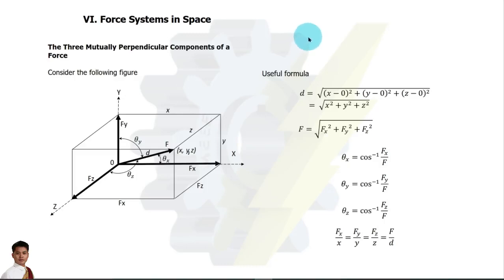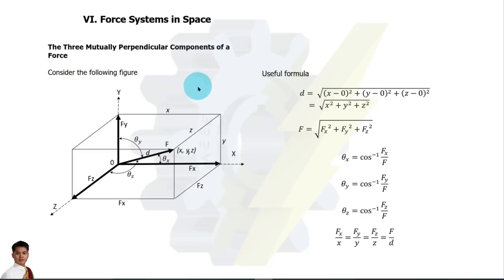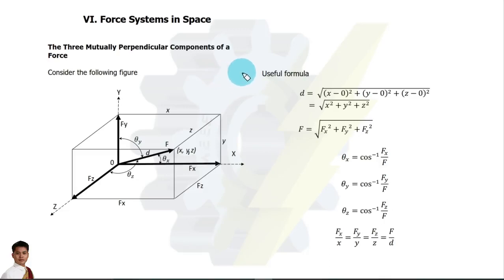In this video we are going to discuss force systems in space, which is Chapter 6 from the book of Ferdinand Singer. This chapter focuses on forces with three components. We are going to solve and find the resultant, the components, and also the summation of moments of the given forces. Here we have the formula for the components of the force.